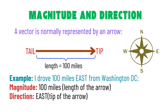Now, let us look into this example. If you say, 'I drove 100 miles from Washington, D.C.,' you could have gone in any direction. But if you say, 'I drove 100 miles east from D.C.,' you've given both the distance — how much — and the direction — which way. That's exactly what a vector represents.